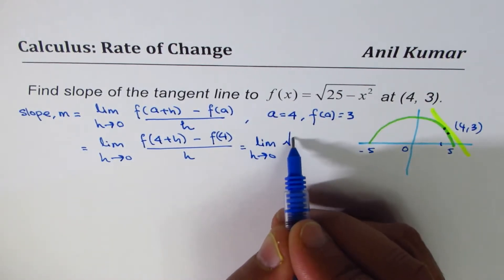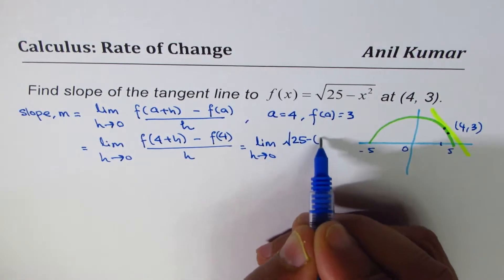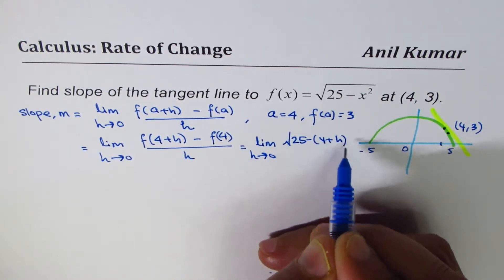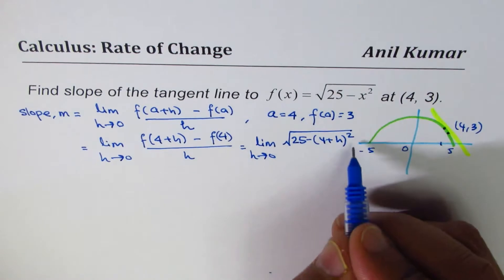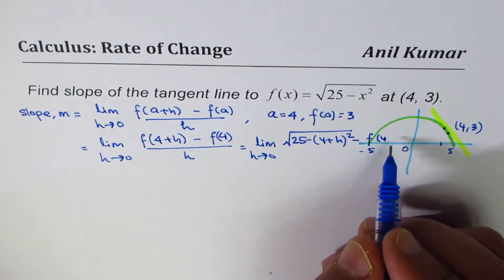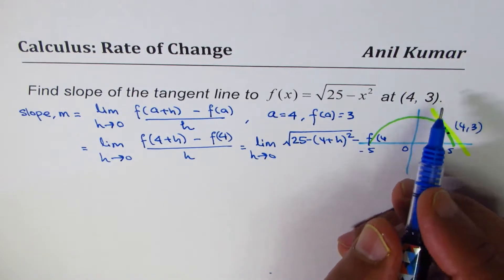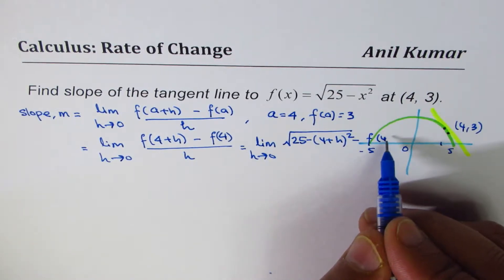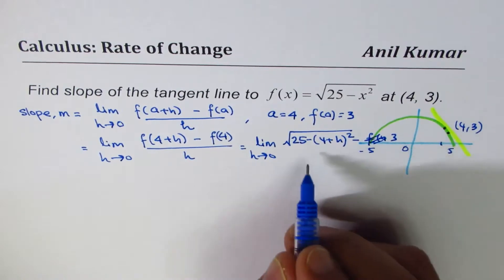square root of 25 minus (4+h) whole square minus f(4). And f(4) basically is the value 3. So we could write 3 here. Divided by h.